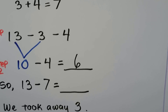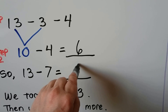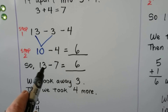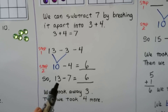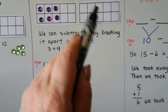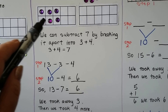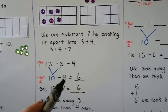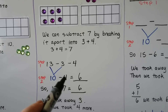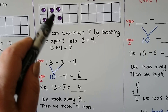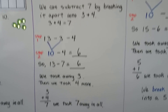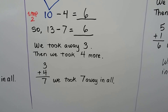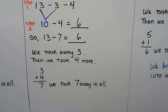10 minus 4 is equal to 6, so 13 minus 7 is equal to 6. We found 13 minus 7 by doing 13 minus 3, which gave us a full 10 frame. Then we took 4 more away so that we took 7 in all, and there were 6 left. 3 plus 4 is 7. We took away 7 in all. 13 minus 7 is equal to 6.